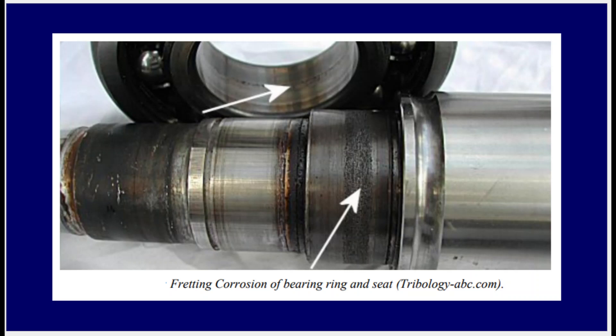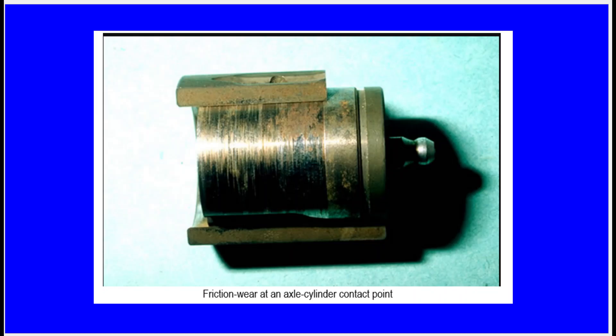Fretting corrosion of bearing ring and seat — you can see the fretting corrosion experienced by the bearing ring and seat. Friction wear at an axle-cylinder contact point — you can see the friction wear from the axle-cylinder contact point in the figure above.